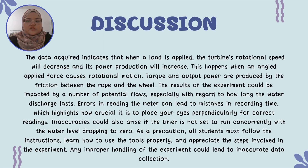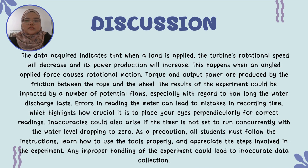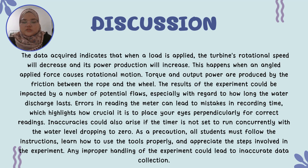Moving to the discussion, the data indicates that when a load is applied, the turbine's rotational speed will decrease and its power production will increase. This happens when an applied force causes rotational motion, producing torque and output power through the turbine's rotational motion. The results of the experiment could be impacted by potential flow measurement errors, especially regarding how long the water discharge lasts. Errors in reading the meter can lead to mistakes in recording time, which highlights how crucial it is to place your eyes perpendicularly for correct readings. Inaccuracies could also arise if the timer is not set to run concurrently with the water level dropping to zero.